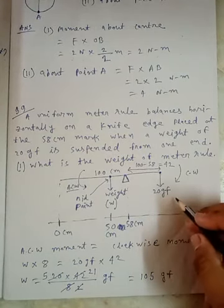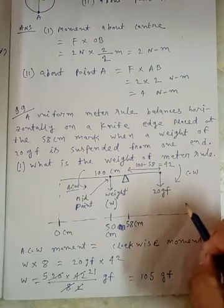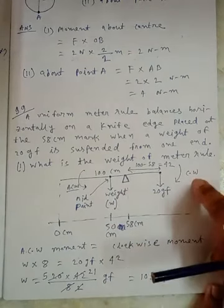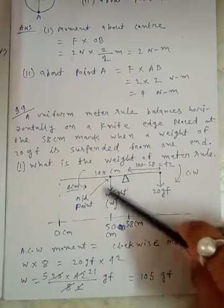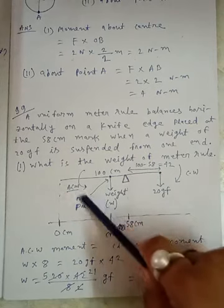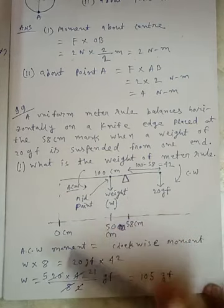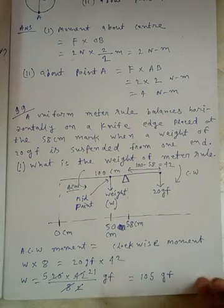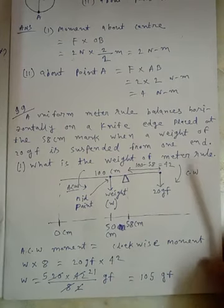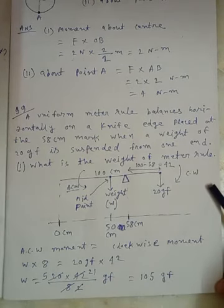Now, observe here. 20 GF force wants to rotate the rod about the pivot point clockwise and this weight of the meter rule wants to rotate that rod anticlockwise. We know for equilibrium, anticlockwise moment should equal clockwise moment.